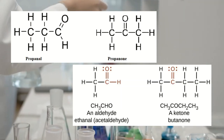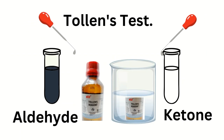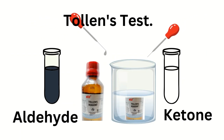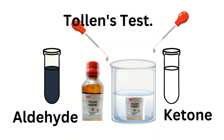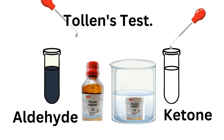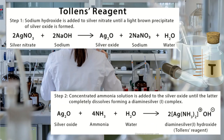We can distinguish aldehydes from ketones by Tollens' test. By adding a solution of Tollens' reagent to an aldehyde and ketone solution, aldehydes are able to be oxidized into a carboxylic acid and produce a silver mirror, while ketones cannot.